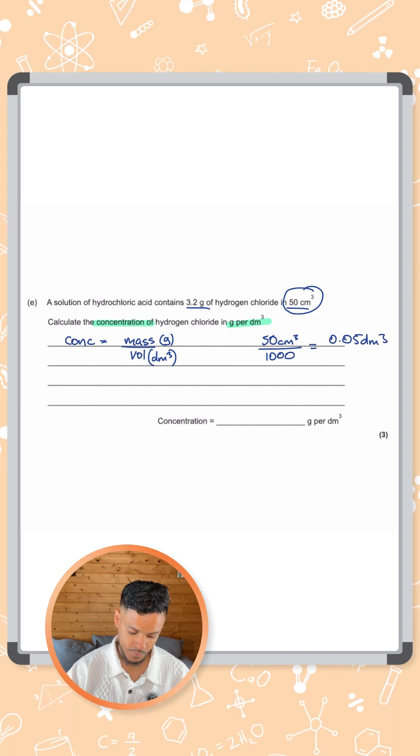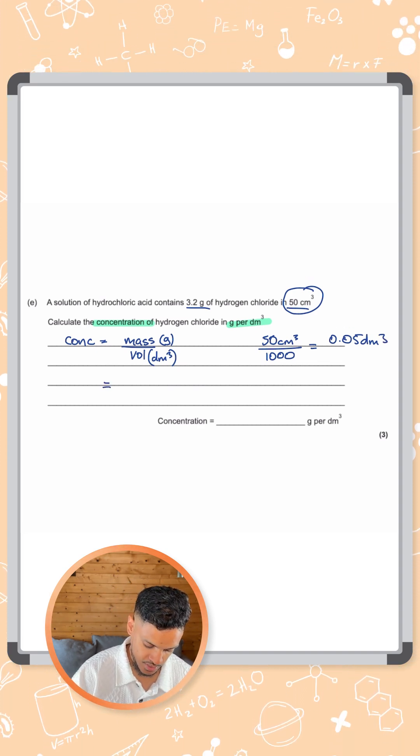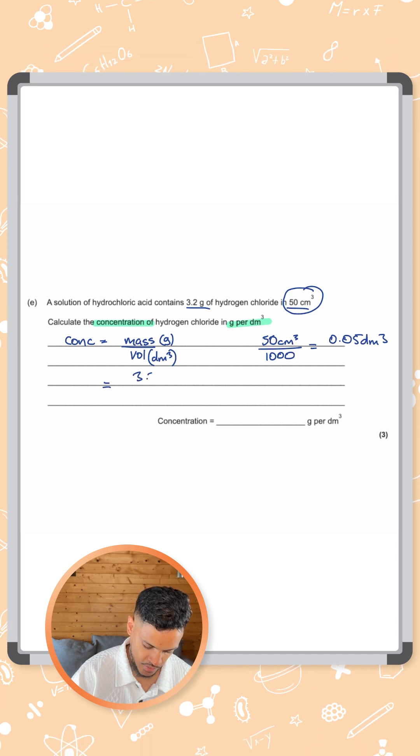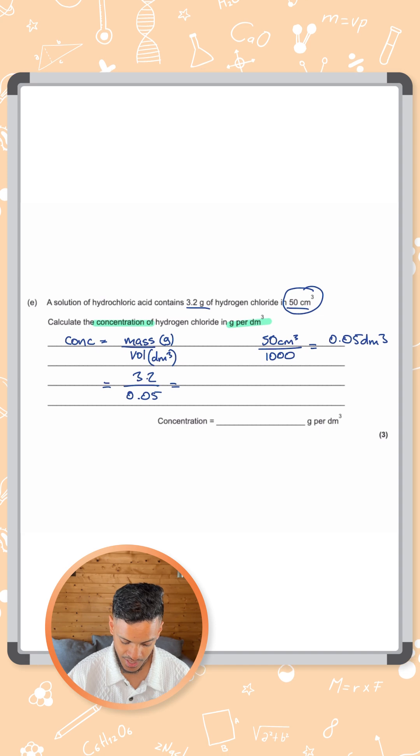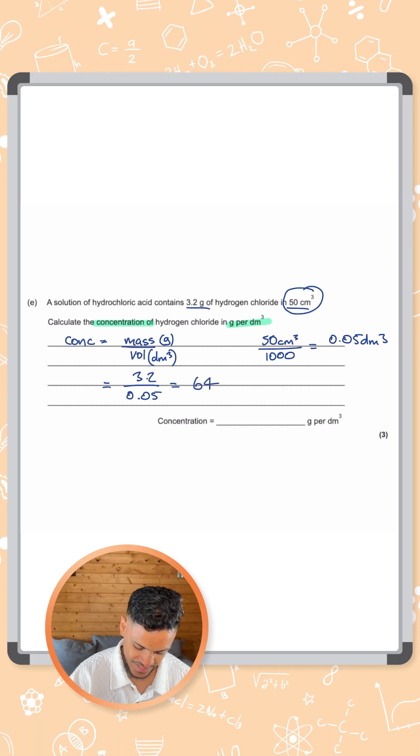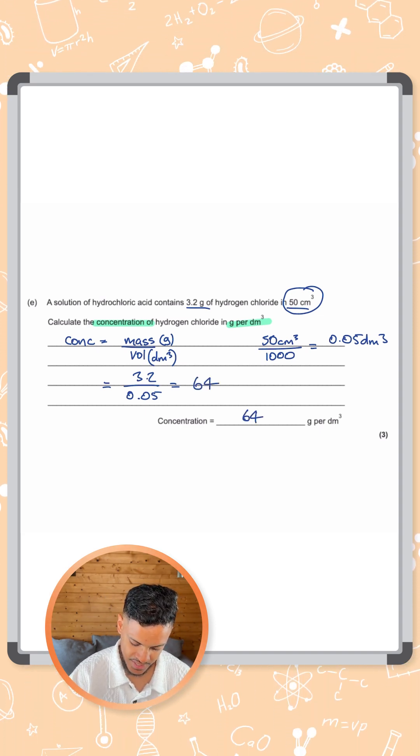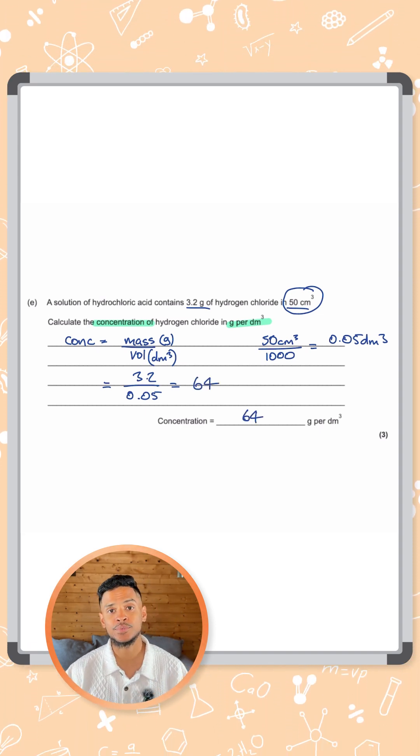Now we can get that volume and put it into the equation to give us the mass 3.2 over 0.05. Put that into your calculator and you should get an answer of 64. So that's 64 grams per dm cubed for that one.